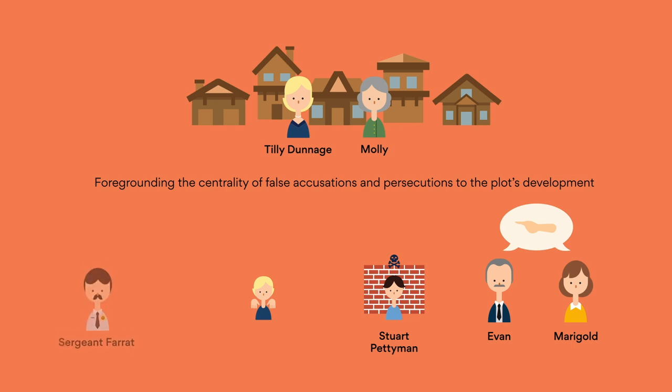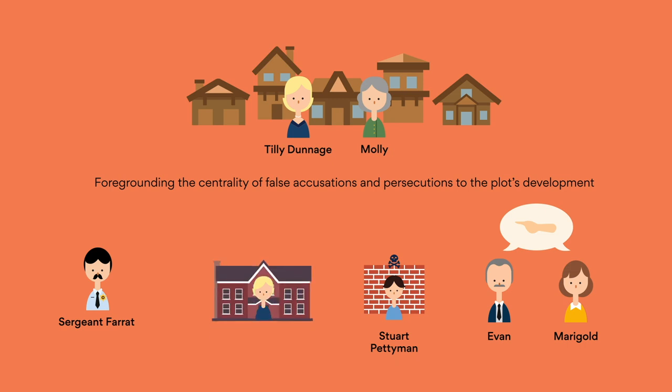As a result, Sergeant Farrat, Dungatar's policeman, arranged for Tilly to be sent to a Melbourne boarding school. Although the novel does not provide extensive detail regarding Tilly's time away from Dungatar, the reader is crucially made aware that she became an accomplished dressmaker under the tutelage of Madeleine Vionnet in Paris.